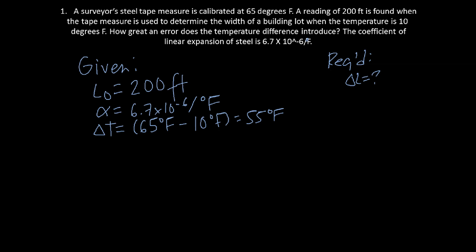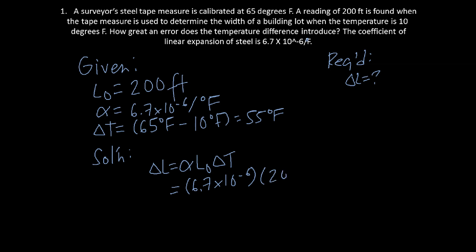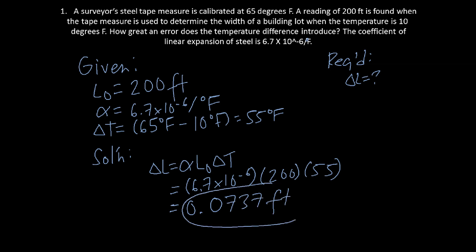The solution uses the formula from our mnemonic ALAT: delta L equals alpha times L0 times delta T. Substituting the values: 6.7 times 10 raised to negative 6, times 200, times 55. Our final answer is 0.0737 feet.